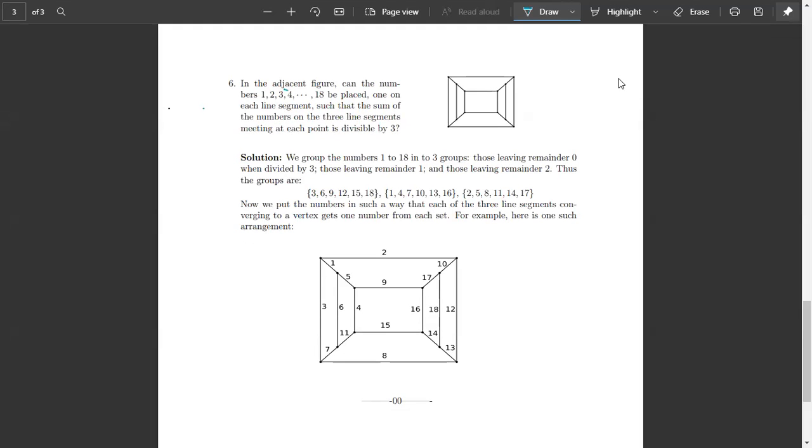We have the problem in the adjacent figure. Can the numbers 1 to 18 be placed on each line segment such that the sum of the numbers on the three line segments meeting at each point is divisible by 3?